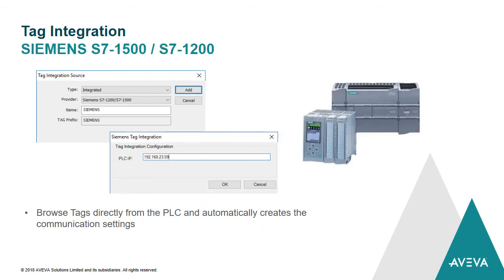Here is the enhancement we made for our existing tag integration that could already connect to PLCs from Siemens. To get the tag names and automatically create the communication settings, we were able to do that with the S7-1500. On this release, we enhanced that and now we can deal with the S7-1200 as well.